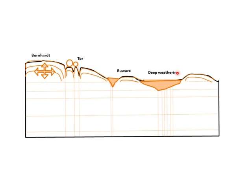In some environments the spacing between outcrops may be kilometers, with most of the area being deeply weathered soil. In other areas, like the Matopos Mountains in southwestern Zimbabwe, there are many more of these rocky features with relatively few flat areas in between.